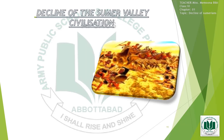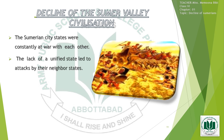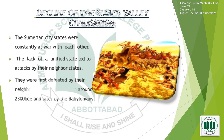Decline of the Sumer Valley Civilization: the Sumerian city-states were constantly at war with each other. The lack of a unified state led to attacks by neighboring states. They were first defeated by their neighbor, the Akkadians, around 2300 BCE, and later by the Babylonians. Climate change was also a reason for the decline of the Sumer Valley Civilization. As a result of poorer crop production, Sumer became less capable of responding to famine, and the Sumerian city-states were eventually absorbed into the Akkadian population.